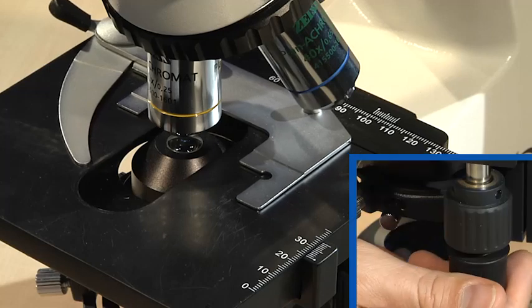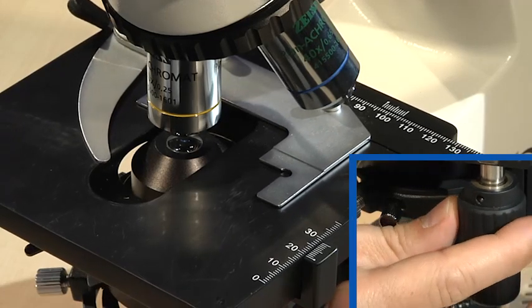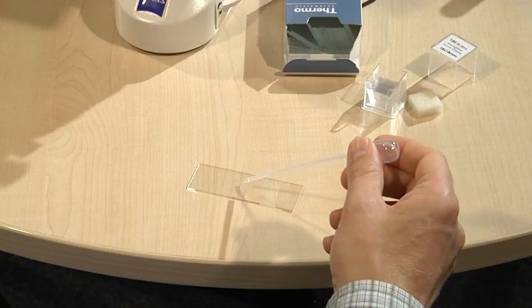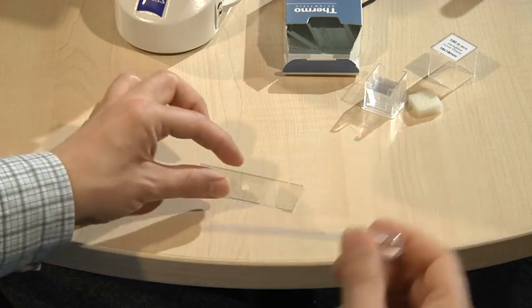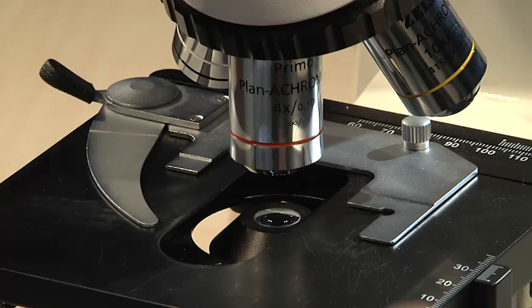The specimen stage is equipped with control knobs for moving the slide in X-Y directions. Here, the specimen, mounted onto a glass slide, is placed for observation.